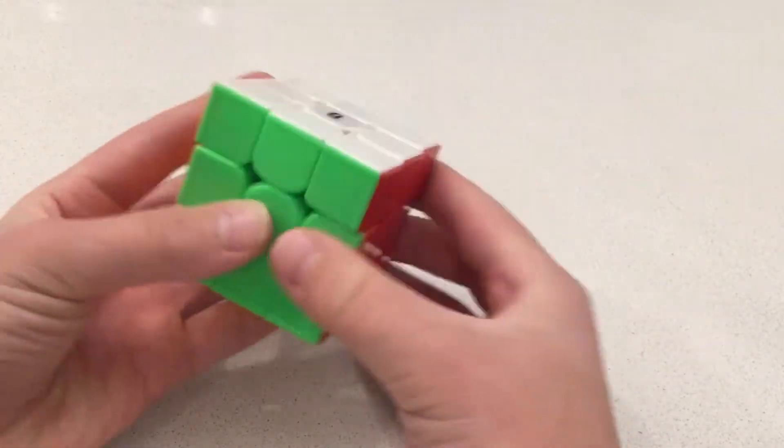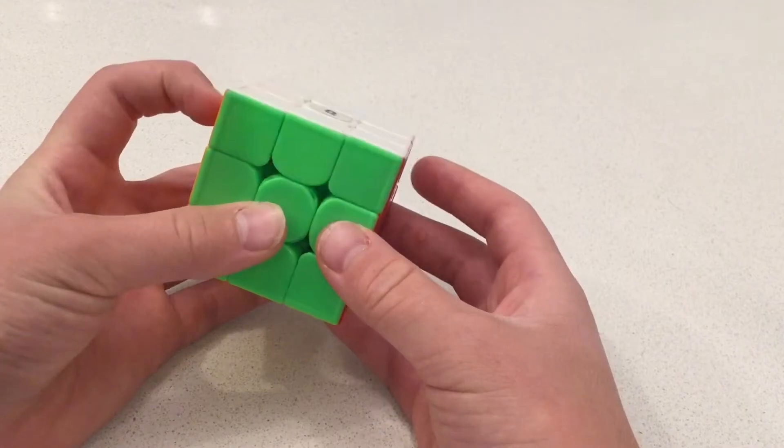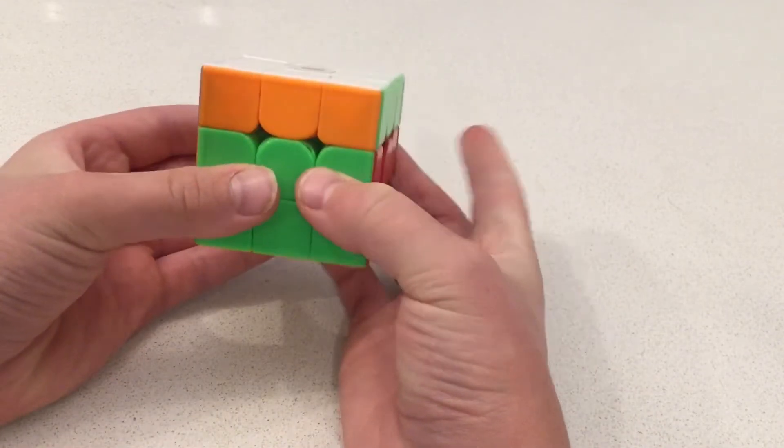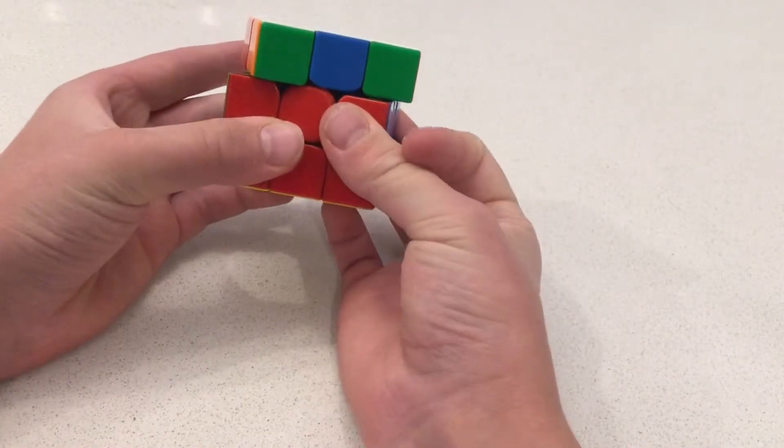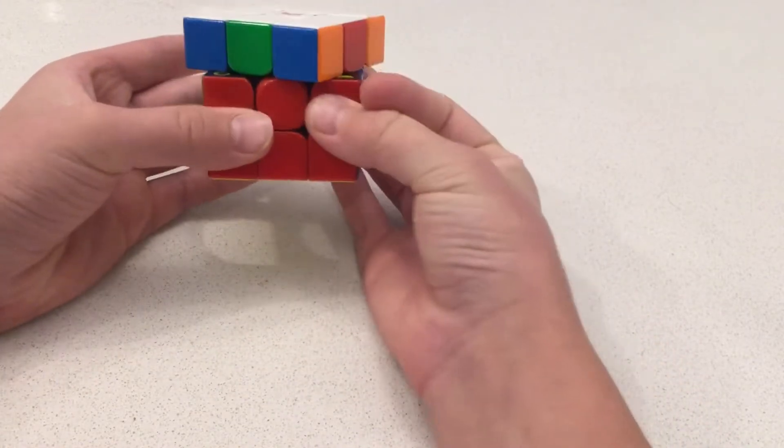While other cubes turn extremely smoothly and fluid, and have really good corner cutting, and also have magnets, and can do a U-4. Yeah, well, that's not a fluke. This can do it, too. They're really good. Look at them go!